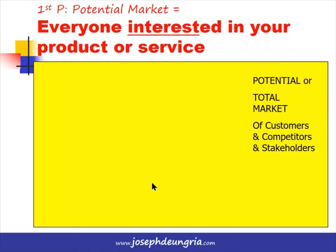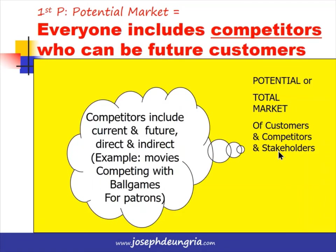The first P is the Potential or total market, which refers to everyone interested in your product or service. This is represented by the yellow rectangle. The total market consists of customers, competitors, and stakeholders — including future, direct, and indirect stakeholders. For example, a movie showing in a cinema is not just competing with other movies; it's competing with ball games, Netflix, and concerts. So the potential market includes all current and future direct and indirect substitutes and competitors.